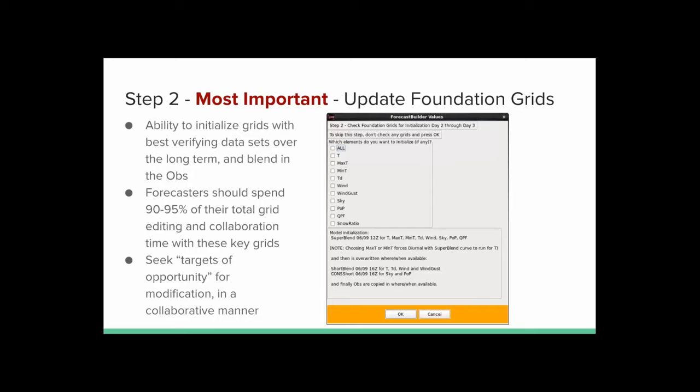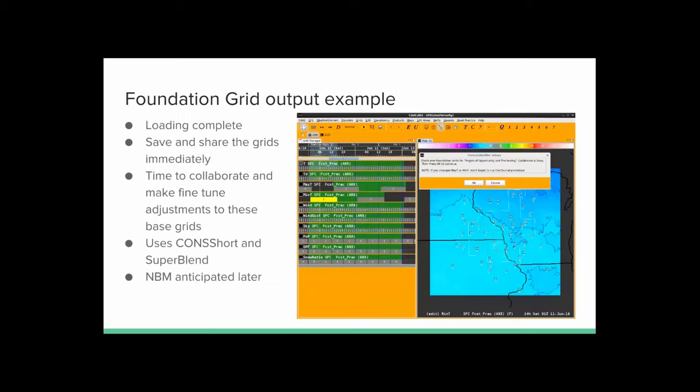Here's what it looks like after choosing a time period for a couple 12-hour segments. At this point you can save and share those grids immediately, collaborate them, and make adjustments. This brings in datasets like ConsShort, Short Blend, and Super Blend as a starting point. In the future, when the NBM becomes available, we can simply swap out Super Blend with NBM and there'd be no significant change for Central Region. Your objective is to go through and seek targets of opportunity for modification in a cooperative manner — perhaps issues with snowpack representation, or dew point mixing depth in a fire weather situation.